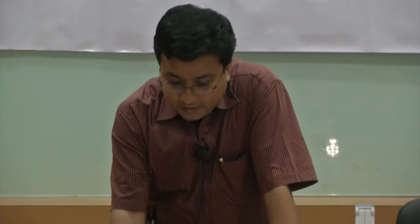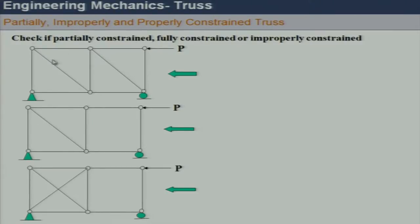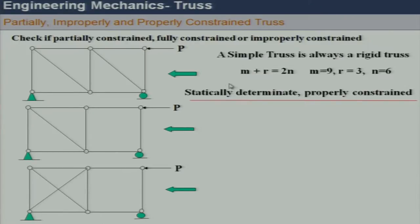Let's do some exercises — all we have to answer is whether each truss is partially constrained, fully constrained, or improperly constrained. The first one is properly constrained. Why? Because it is a simple truss supported by three proper reactions. The reaction in the ax direction can absorb horizontal forces as well, so it is balanced in the x-direction. It is a properly constrained and statically determinate truss.